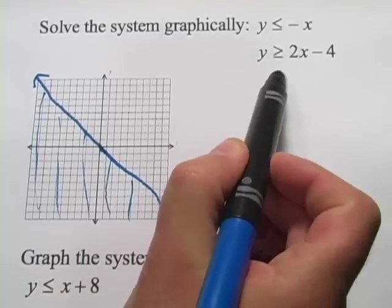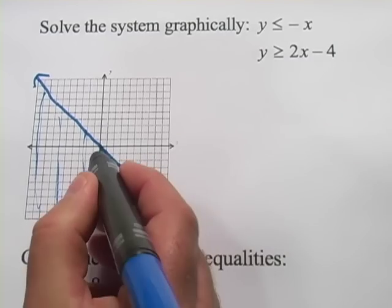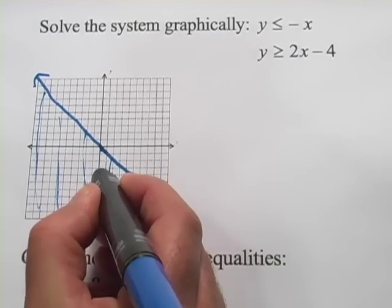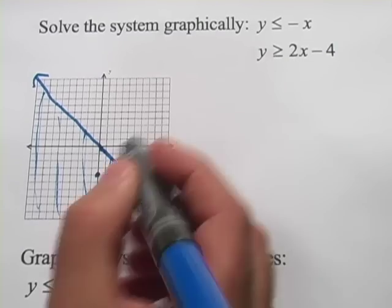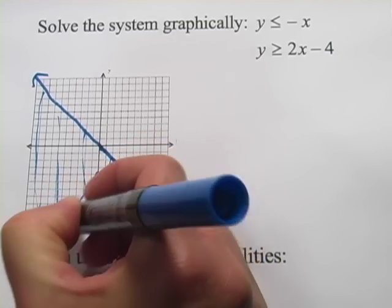Let's work on the next one. We've got y is greater than or equal to 2x minus 4. It's got a y-intercept of minus 4, so 1, 2, 3, 4. It's got a slope of positive 2, so rise over run, it goes up 2 over 1. It's going to look something like this.